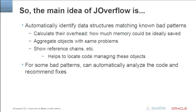These examples illustrate why we embarked on this project. The main idea of our tool is to automatically identify data structures matching various known bad patterns. The tool finds all these objects, calculates their overhead, aggregates objects with the same problems, and shows reference chains. We are also working on automated code analysis: when presented with a long list of bad object clusters, this analysis helps identify the low-hanging fruit — what can be changed quickly to get quick progress.